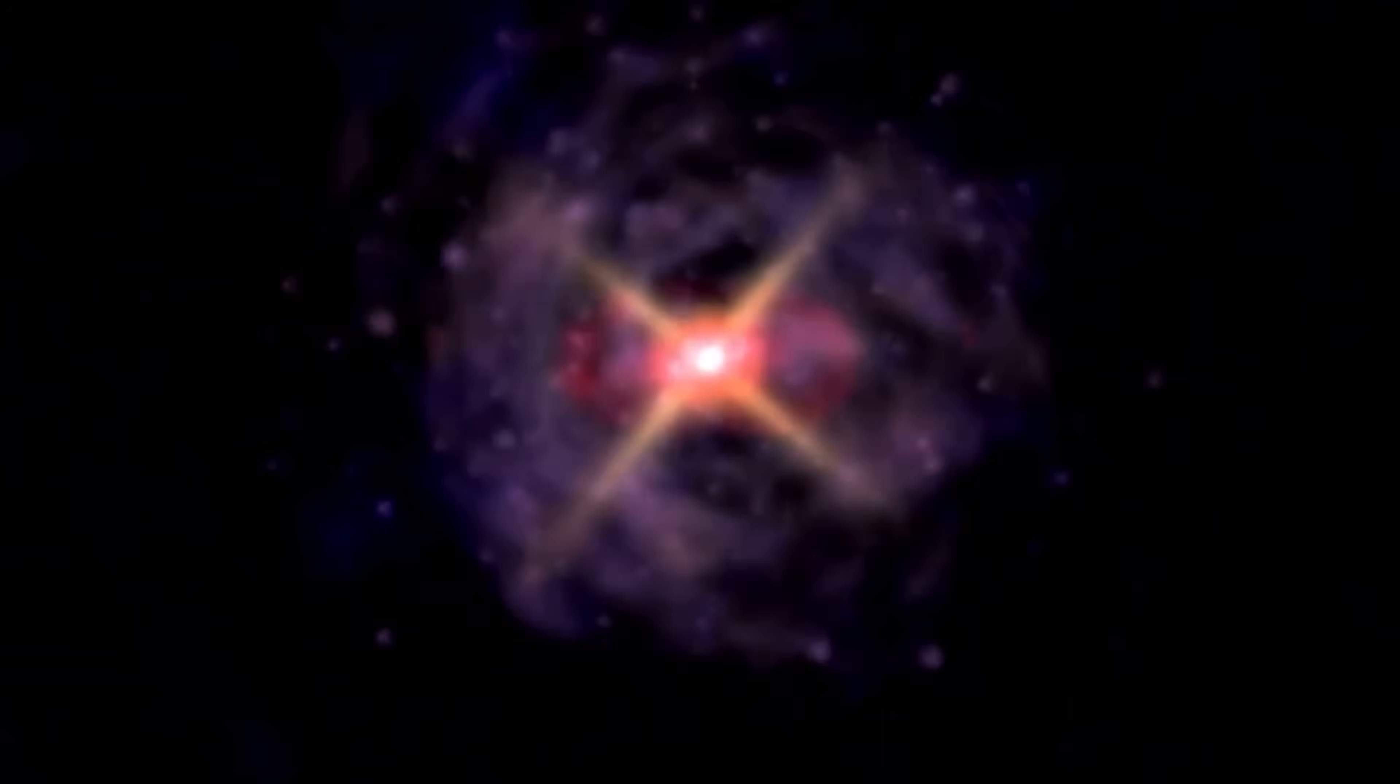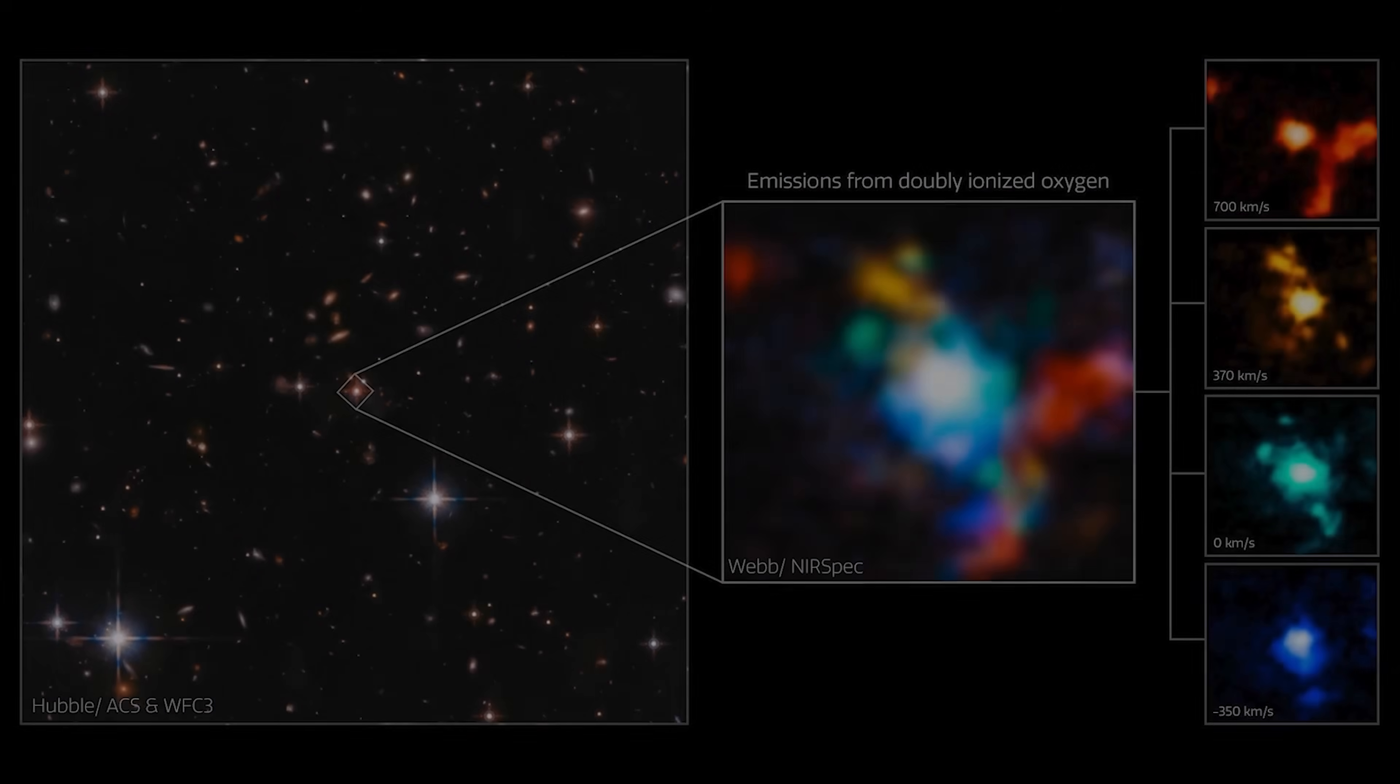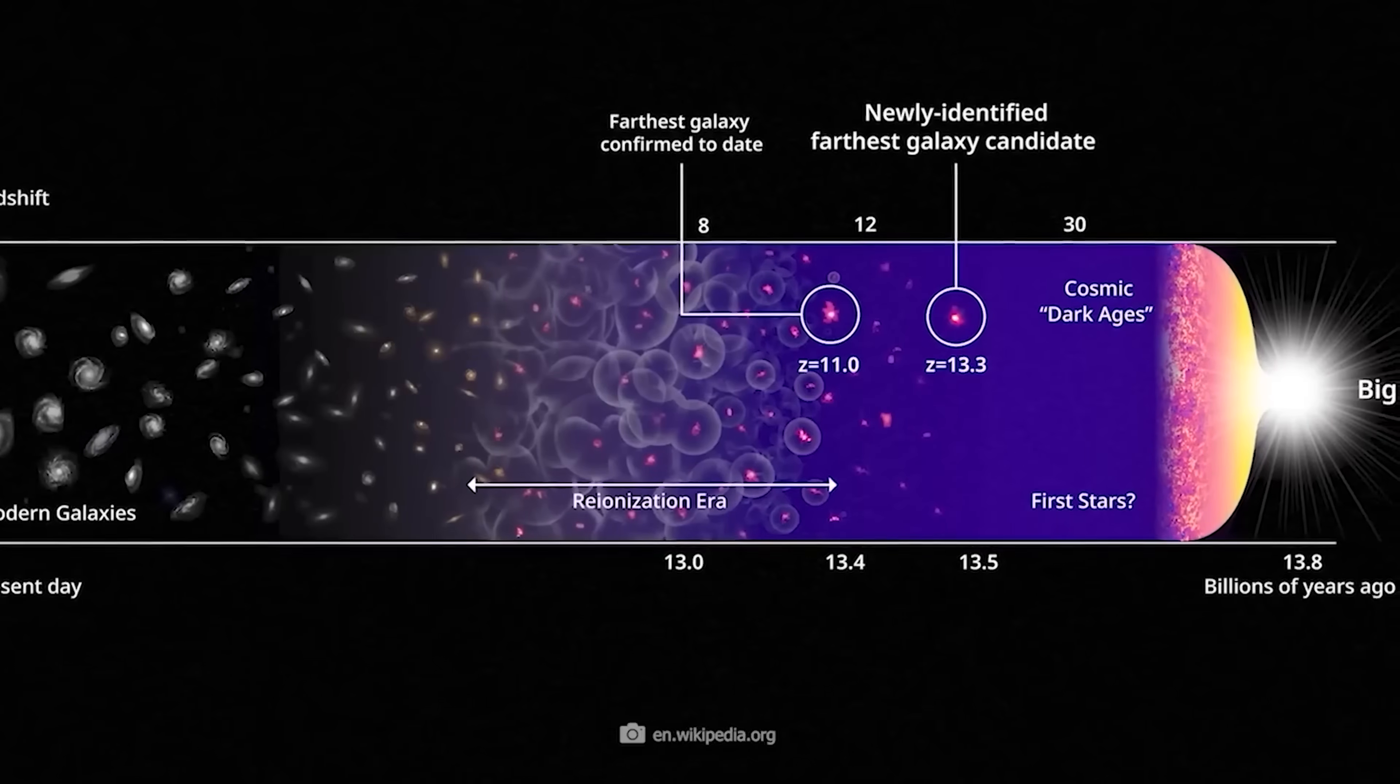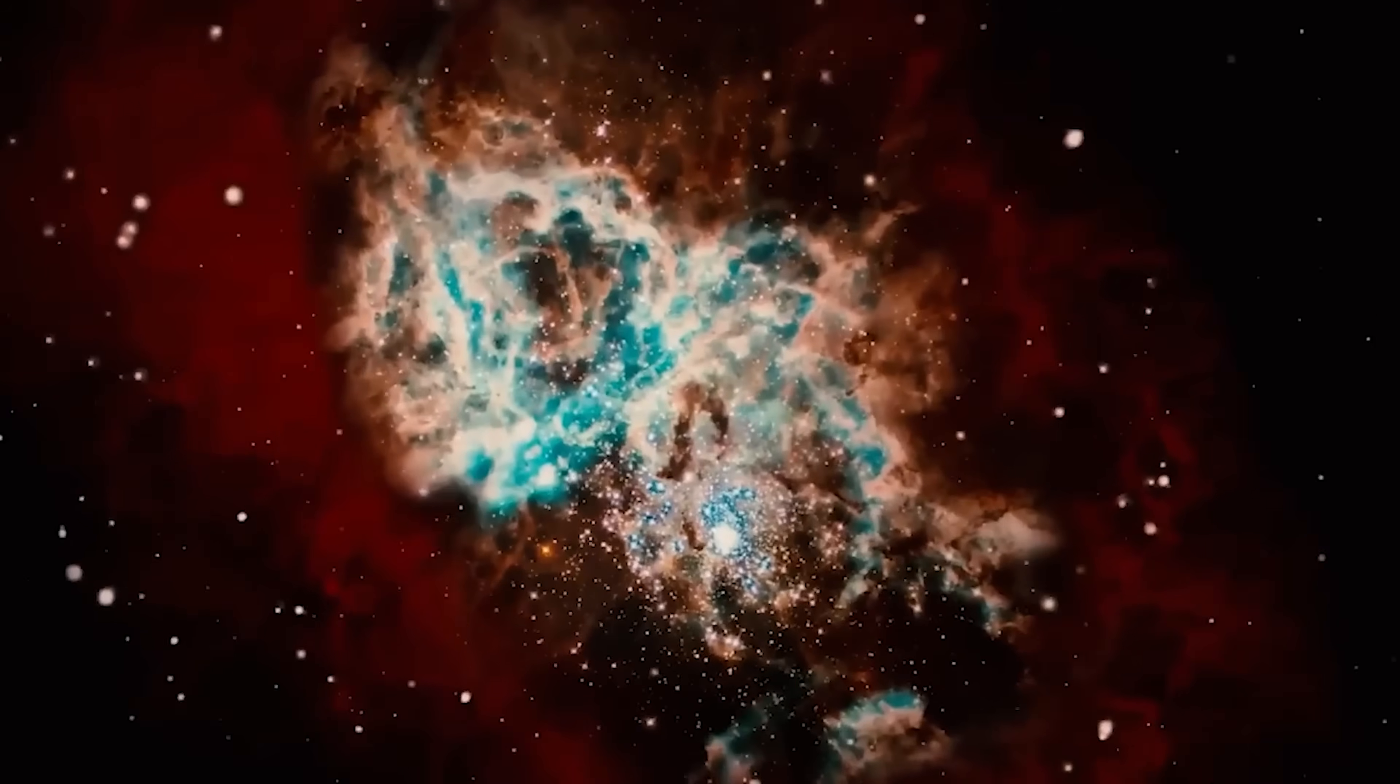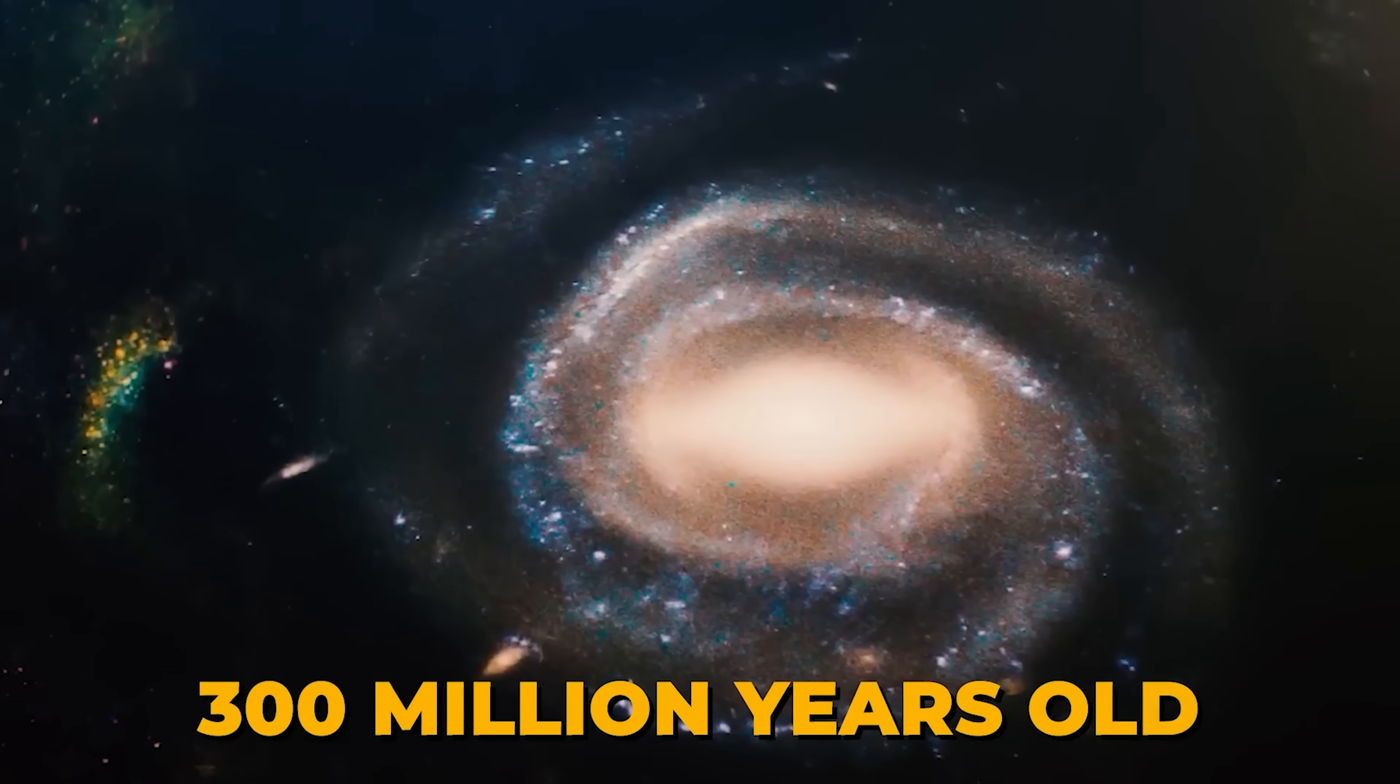Objects so small and yet so brilliant, they were visible even before spectroscopy confirmed their distances. Webb measured their redshifts, the cosmic fingerprint of how much their light had been stretched by the expanding universe. The values were astonishing: z equals 13, 14, even 16. Those numbers translate to a time when the universe was only about 300 million years old.